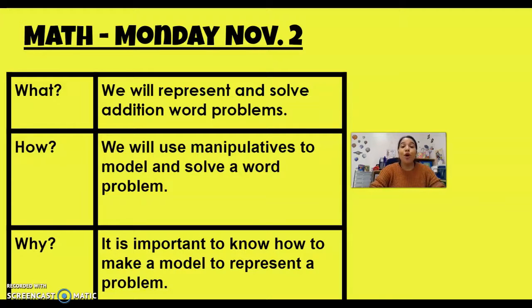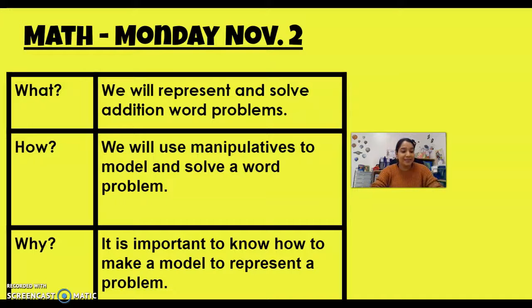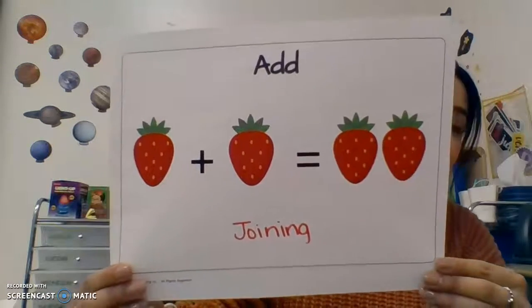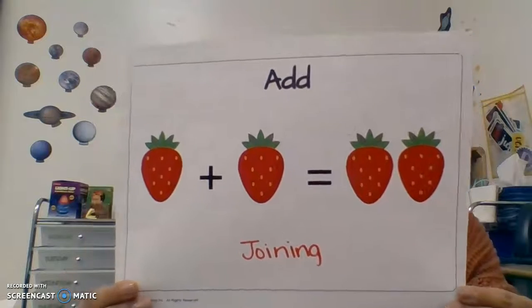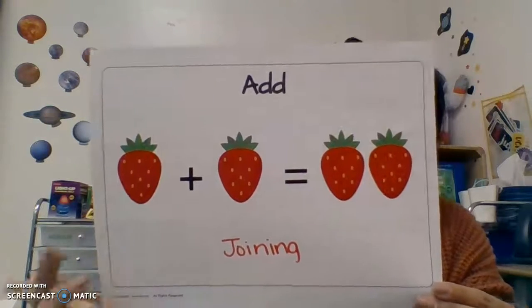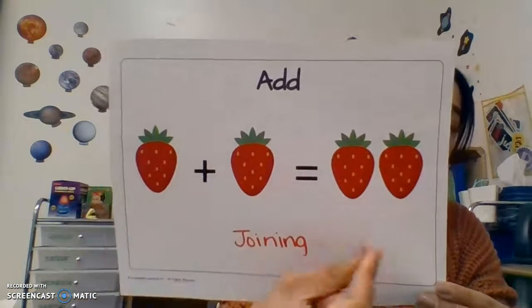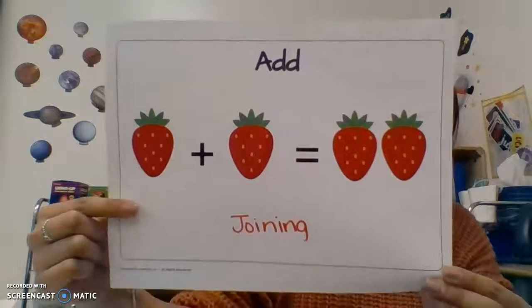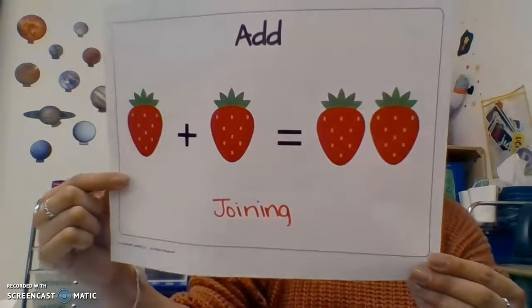Let's go ahead and review our vocabulary words and two new vocabulary words before we start today's lesson. The first vocabulary word, which you've already seen before, is add. When we add, we are joining — putting things together. One strawberry plus one strawberry is two, so when we add, we are joining.